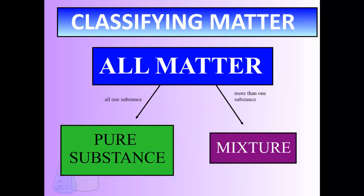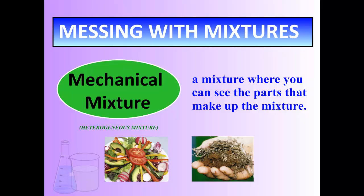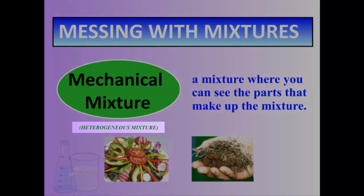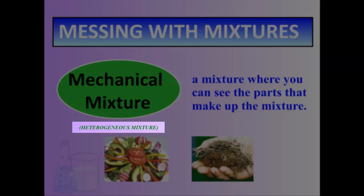Now, if everything is divided as a pure substance or a mixture, that means if we have a pure substance, that's it — there's nothing more we can do with it. However, if it's a mixture, it contains different parts, and there are actually different kinds of mixtures we can look at. First, we have a mechanical mixture — a mixture where you can see all the parts that make up that mixture. Examples include salad, soil, Fruit Loops, Lucky Charms — I can see all the parts and pick them out if I need to. Pay attention to the word heterogeneous; we'll come back to that in a second.